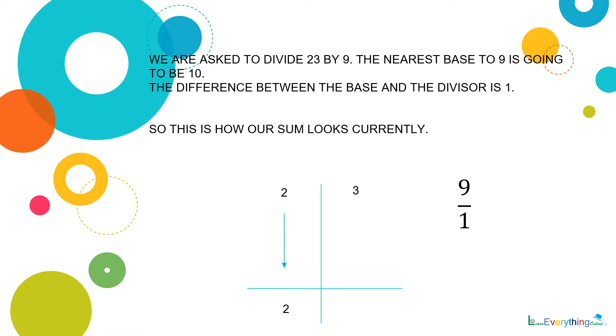And the 2 is also written on the left-hand side down right here. And 9 upon 1, which is basically our divisor upon the difference in the base and divisor, is written in fraction form on this side.